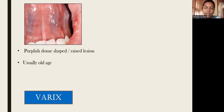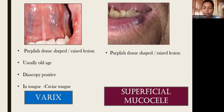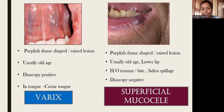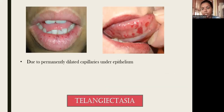Varices are purplish dome-shaped lesions commonly seen in older patients and are dioscopy-positive. If seen on the ventral surface of the tongue, they are known as caviar tongue. Superficial mucocele is commonly seen in the lower labial mucosa — also known as mucous extravasation cyst — due to breakage of a minor salivary gland duct. If superficial, it appears as a bluish dome-shaped translucent lesion. Dioscopy is negative for mucocele, as it is not a vascular lesion and shows no blanching.